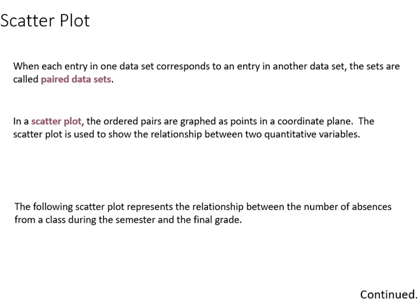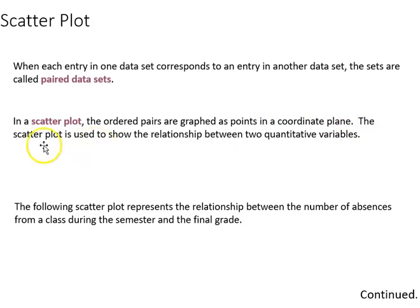Thus far, we've been looking at univariate graphs and displays. Now we're going to shift to bivariate, where we're looking at data for two different variables displayed in the same graph or chart. We're going to start with the scatter plot, which is used when each entry in one data set corresponds to an entry from another — these are called paired data sets. The ordered pairs are graphed in a coordinate plane, and the scatter plot is used to show the relationship between two quantitative variables.